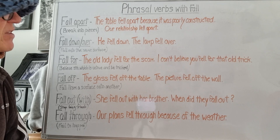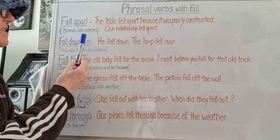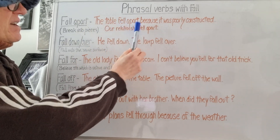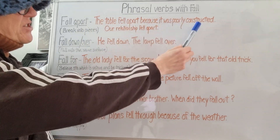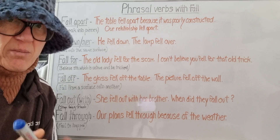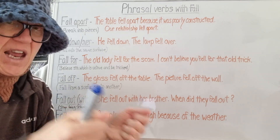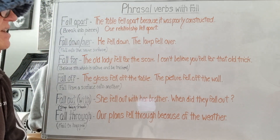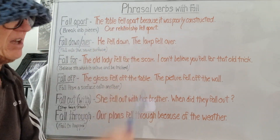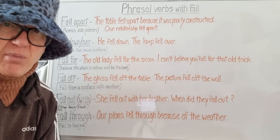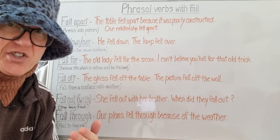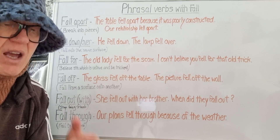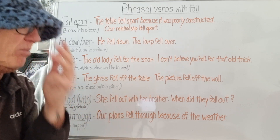Phrasal verbs with fall. 'Fall apart' is to break into pieces. The table fell apart because it was poorly constructed — it wasn't well made. So when you put something heavy on it, it just fell apart, it broke into pieces. This could also be metaphorical: our relationship fell apart. We had a good relationship, we stopped communicating, now we have no relationship. Our relationship fell apart.